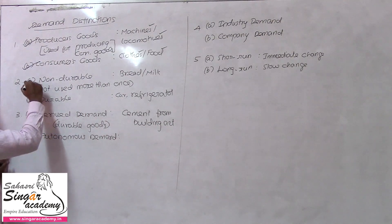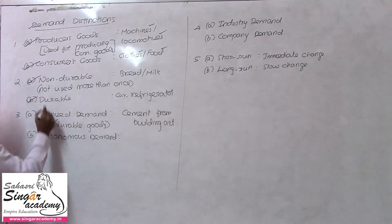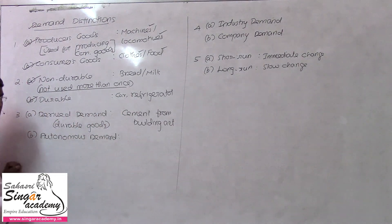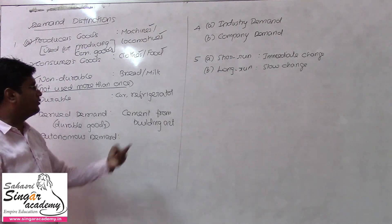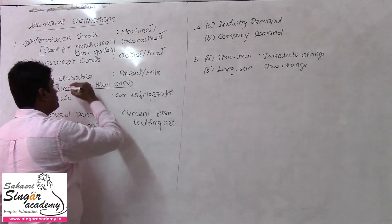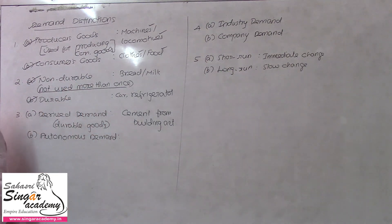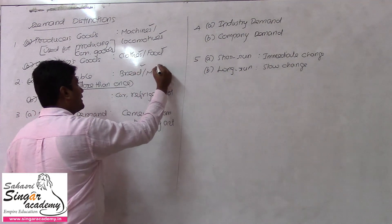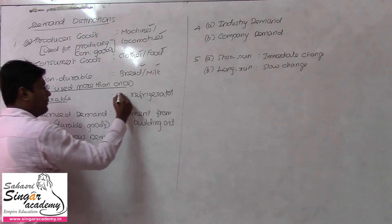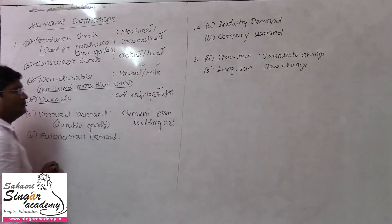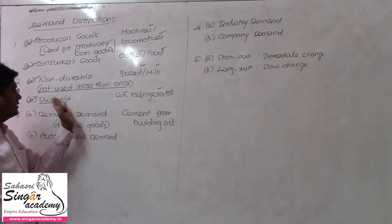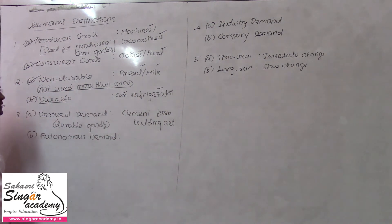Second block: Durable and Non-Durable Goods. Non-Durable goods are not used more than once — they are one-time use, like consumables. Bread and milk are examples of Non-Durable Goods. Durable Goods, on the other hand, can be used repeatedly and will work for more than a few years — like a car or a refrigerator.